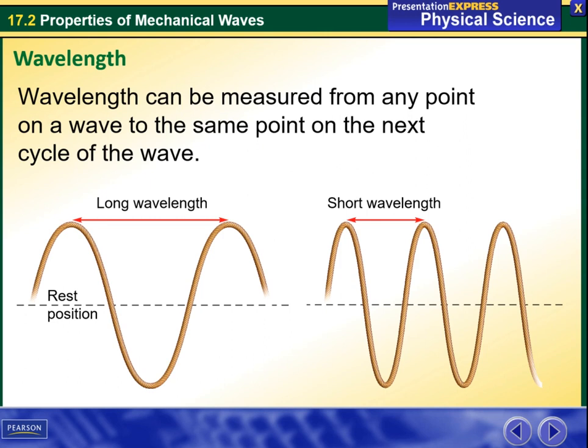So wavelength can be measured from any point on a wave to the same point on the next cycle of the wave. For example, here I have two consecutive crests. This is the long wavelength and this is here a short wavelength. It is the same distance between two consecutive crests or two consecutive troughs.